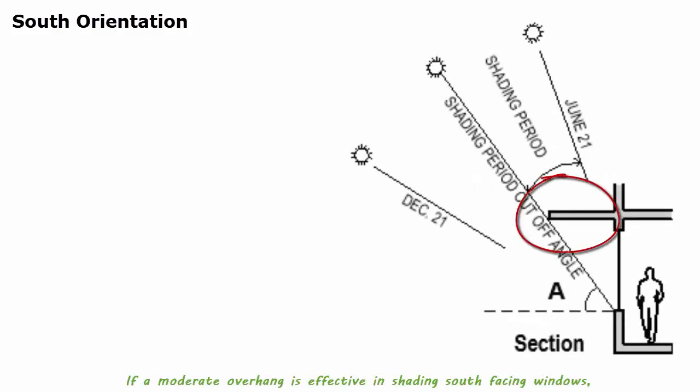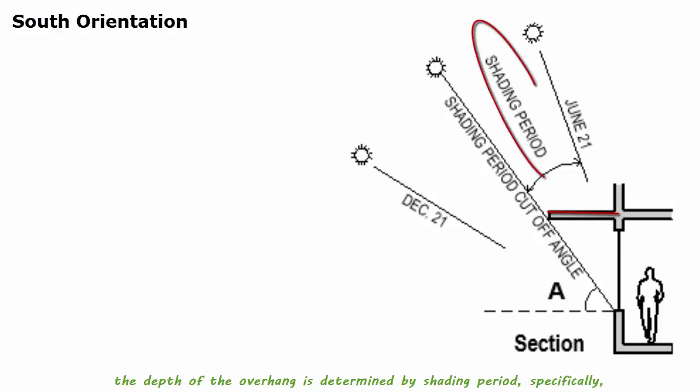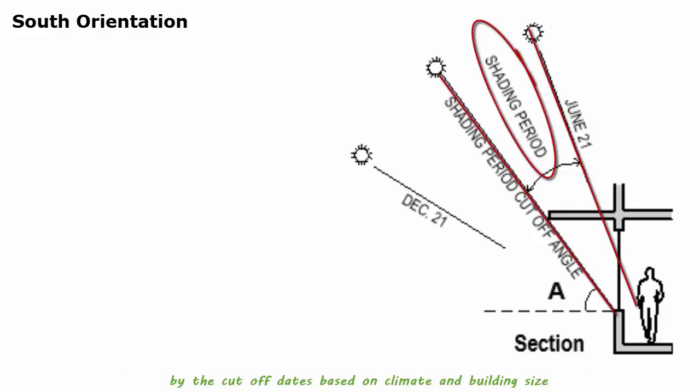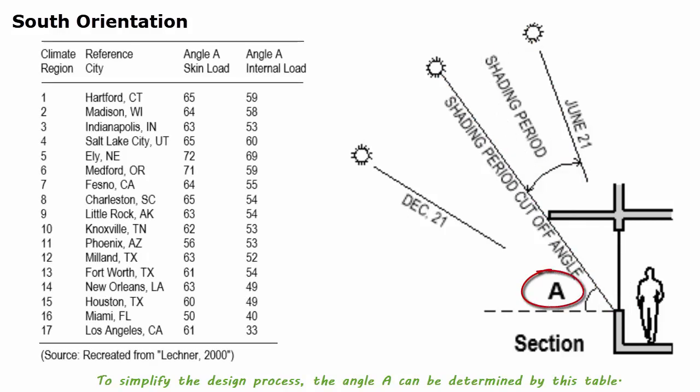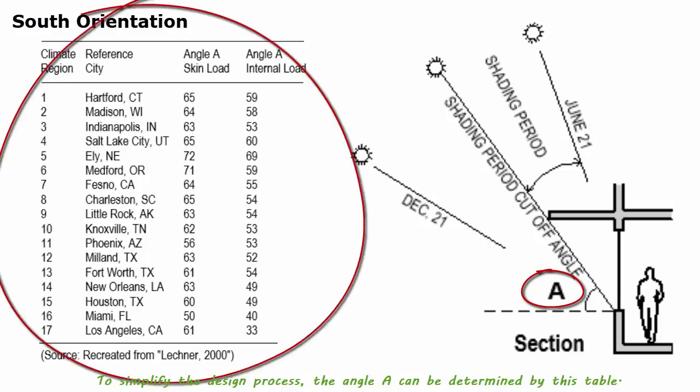If a moderate overhang is effective in shading south-facing windows, the depth of the overhang is determined by shading period, specifically by the cut-off days based on climate and building size. To simplify the design process, the angle A can be determined by this table.